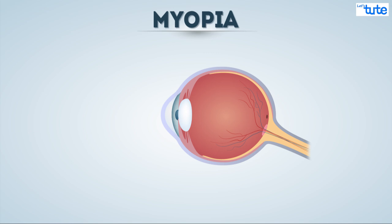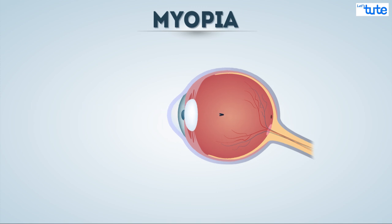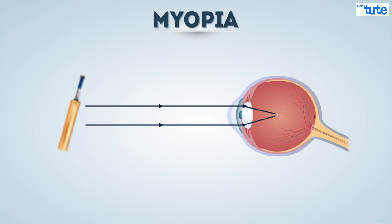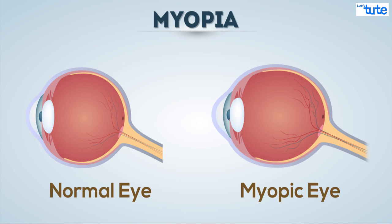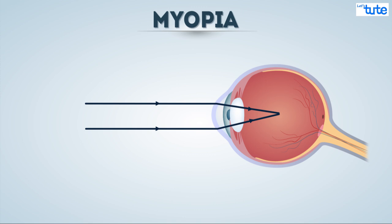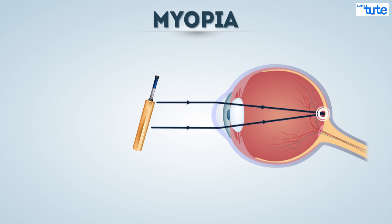Now, in the case of myopia, the image is formed in front of the retina instead of on the retina. In this case, people can see close objects clearly but objects which are farther away are blurry. Why does this happen? This happens due to elongated eyeballs, and because of that the distance between the lens and the retina is increased, which makes the light rays converge in front of the retina. In the case of nearer objects, this does not happen — the light rays get converged on the retina and hence they can see closer objects clearly.